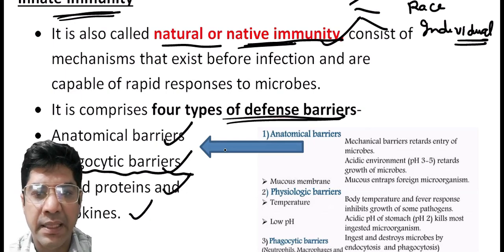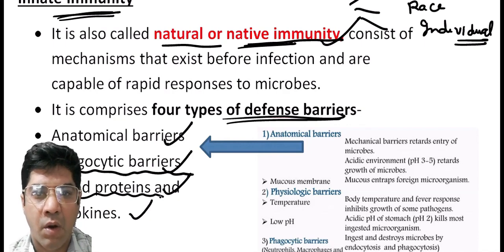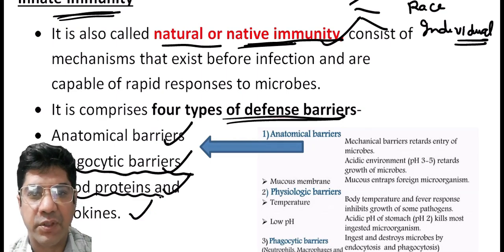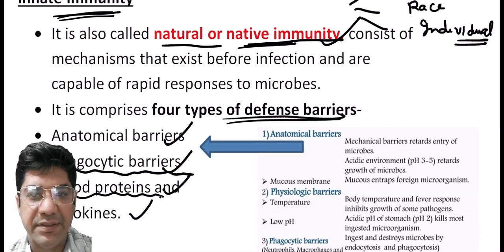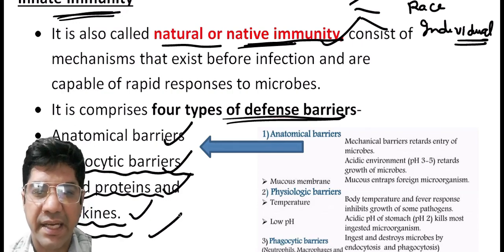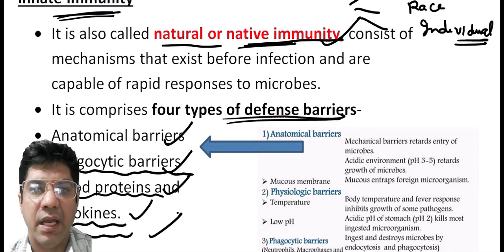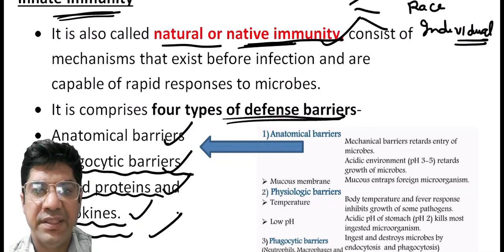The third defense component involves blood proteins, including complement proteins that are part of the complement system, and various acute-phase proteins. Acute-phase proteins are produced by the liver in response to infection or inflammation. Complement proteins are a group of serum proteins that play a role in enhancing the immune response. Cytokines are signaling molecules produced by immune cells that play a role in regulating innate immunity, including activating immune cells, promoting inflammation, and coordinating the body's response to infection.